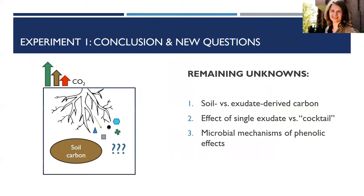There were still some unknowns I was specifically interested in. First, what part of the total CO2 flux is coming from the exudate versus the soil? Second, I still didn't know how the microbes responded to the exudates — what the mechanism was by which they degraded more or less soil carbon. And lastly, a general problem with studying root exudates this way is that we always add just one compound to the soil, while roots exude so many compounds at once. Whether the individual effect of one exudate is the same when many compounds are added simultaneously remains an open question.